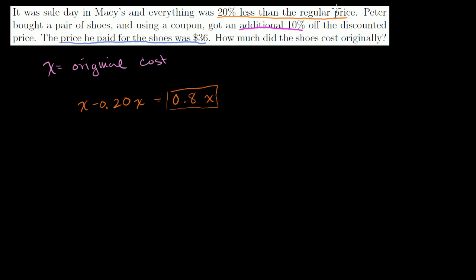And that's what that line is telling us right there. Now, Peter got a pair of shoes and using a coupon got an additional 10% off of this. An additional 10% off of that. So he's paying 10% less than this. Or another way to think of it is he only had to pay 90% of this price.